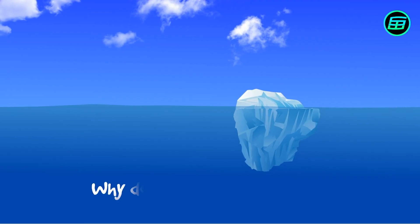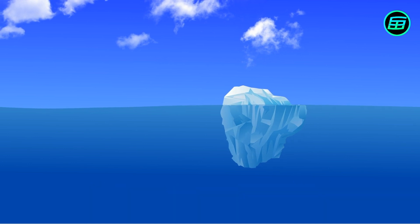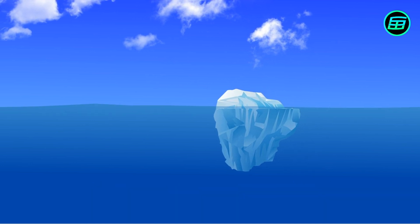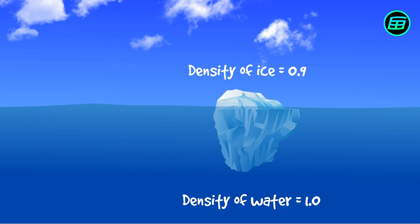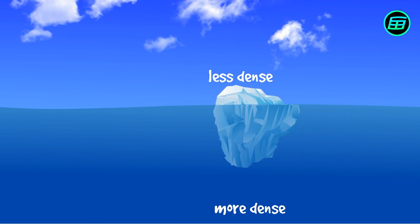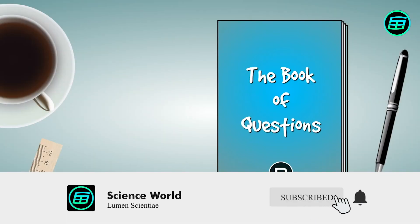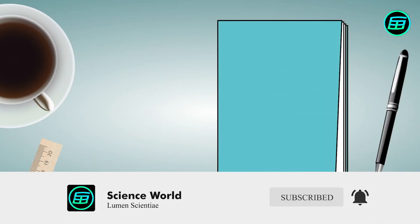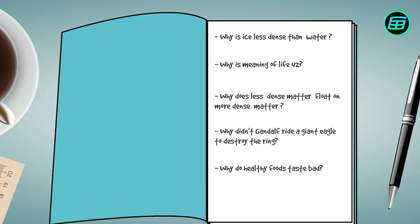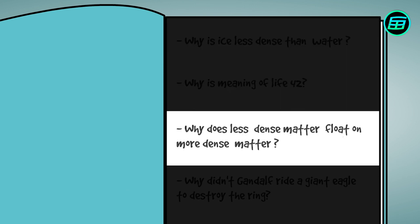So why does ice float on water? Because ice is less dense than water, and less dense matter floats on more dense liquids. Now we have to answer two questions: first, why is ice less dense than water? And second, why does less dense matter float on more dense matter?